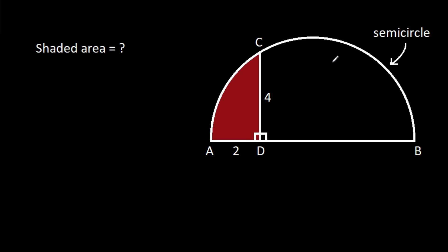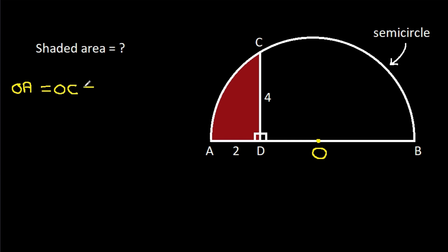In this video, we have been given a semicircle in which AD is 2 and CD is 4. We have to find the shaded area. Suppose the center of the circle is O. Then OA will be equal to OC — that will be the radius. Suppose R.